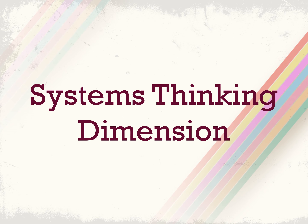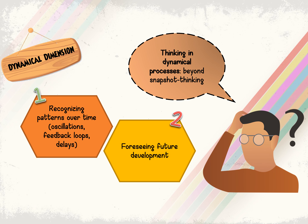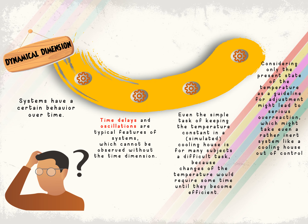Let's move on to the four systems thinking dimensions. The first is the Dynamical Dimension, which is about thinking beyond a snapshot. We try to recognize patterns of oscillations and feedback loops, and foresee future developments. Systems have certain behaviors over time — typical features include time delays and oscillations. For example, adjusting the air conditioning temperature takes a certain amount of time to reach the desired level — this is the time delay.